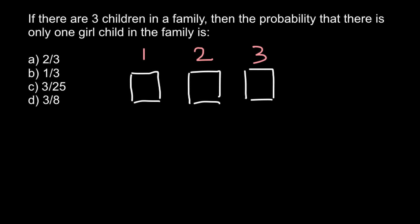So gender is not known, but we know that the first child can be either a boy or a girl. So we have two combinations here. Second child also can be either a boy or a girl, so two combinations here. And third child also can be only a boy or a girl, so two combinations here.